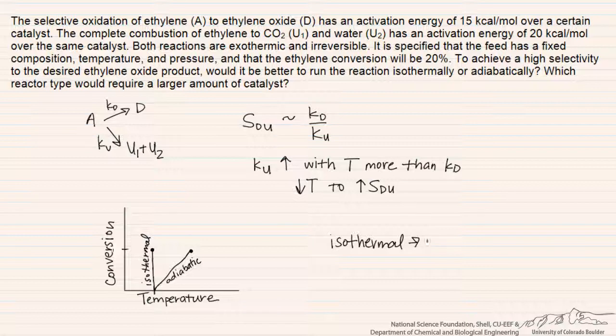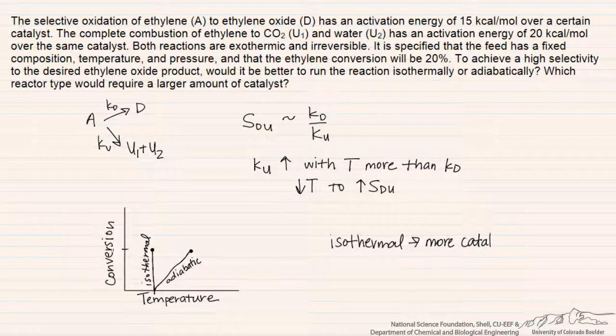And so that's the advantage of using an adiabatic reactor is that the rate is going to be higher because we're operating at higher temperature, but the disadvantage is that the selectivity is going to be lower because the undesired process has a higher activation energy than the desired process.